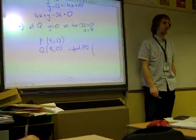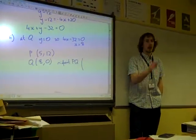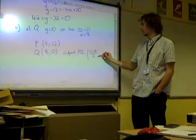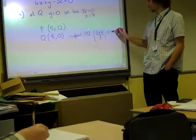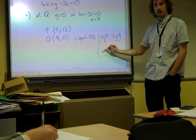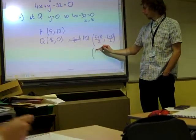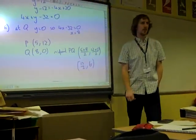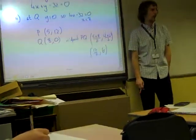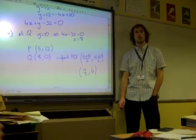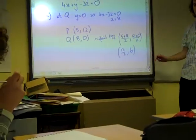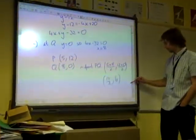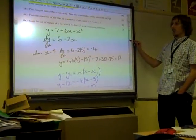And we need the midpoint of PQ. How do we find the midpoint? Add the coordinates together and divide by 2. So that's (5 + 8)/2 and (12 + 0)/2. So we've got the point (6.5, 6).